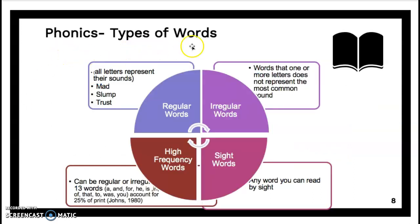A quick review about the types of words: there are four different kinds of words in the English language. You have regular words, where all letters represent the sound they make. Then you have irregular words, where one or more letters do not represent the common sound — these are words we call 'red words' that you have to teach students to read by memory. You have sight words, where a student can see the word and immediately read it — those words are in their orthographic memory. Then you have high-frequency words. Jones found that 13 words in the English language make up about 25% of all print, so these are words you want to make sure students can read from memory.